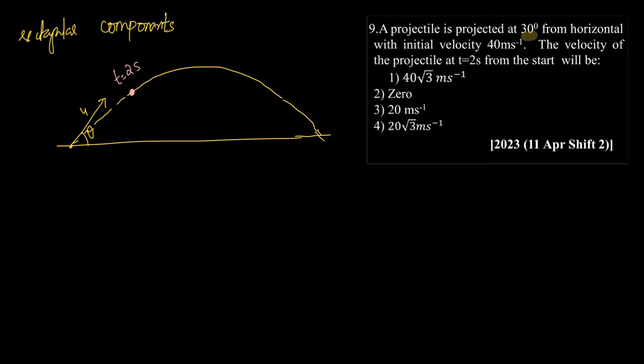How will we start solving this question? By resolving the vector into two. So this is the velocity vector u at an angle theta, it means that it can be resolved in two directions.